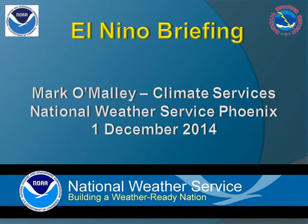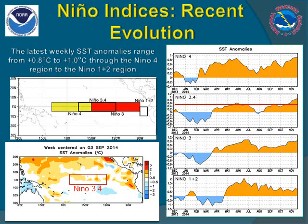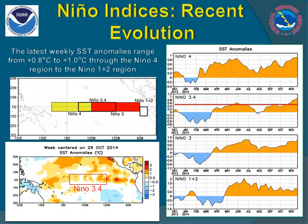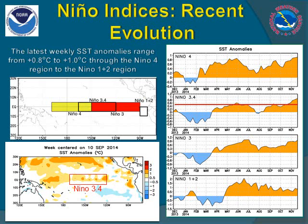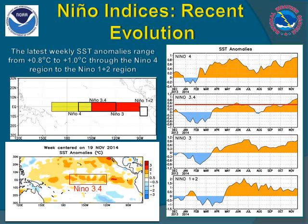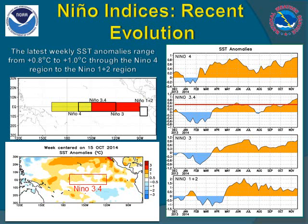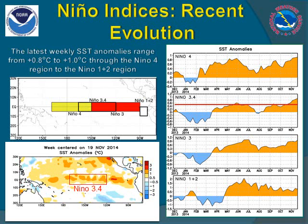Welcome to this El Niño briefing. My name is Mark O'Malley with the National Weather Service NEX. El Niño is defined by abnormally warm water across the equatorial Pacific Ocean that couples with the atmosphere to create changes in the overall circulation pattern and in turn weather patterns.